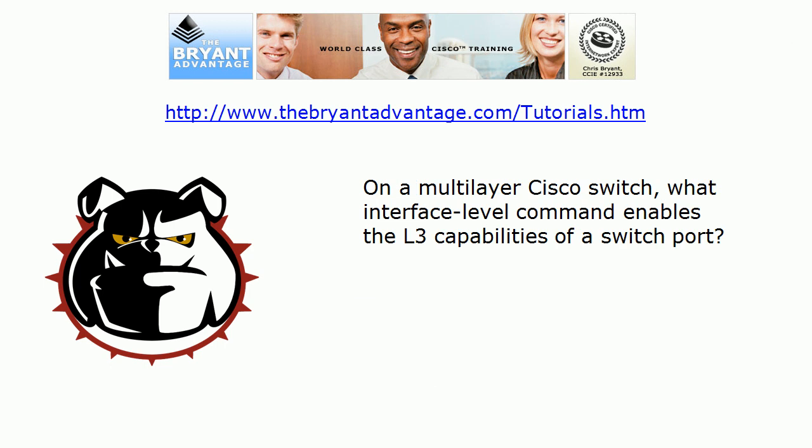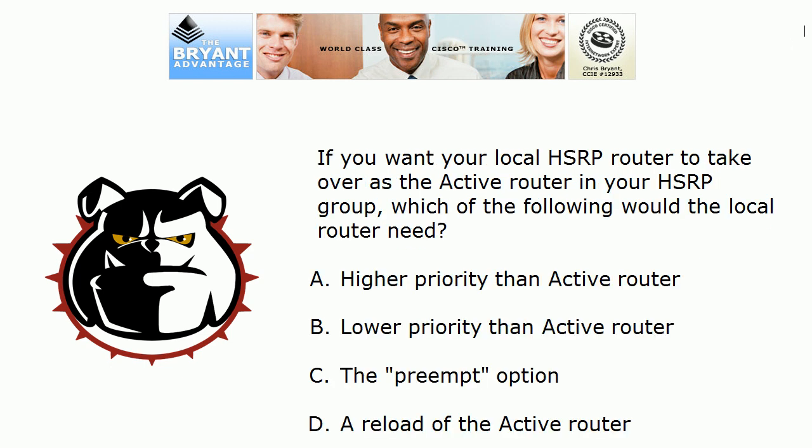On a multi-layer Cisco switch, all ports run in L2 mode by default. If you want to make it a routed port, you enter the command 'no switchport' — that gives it L3 capabilities.